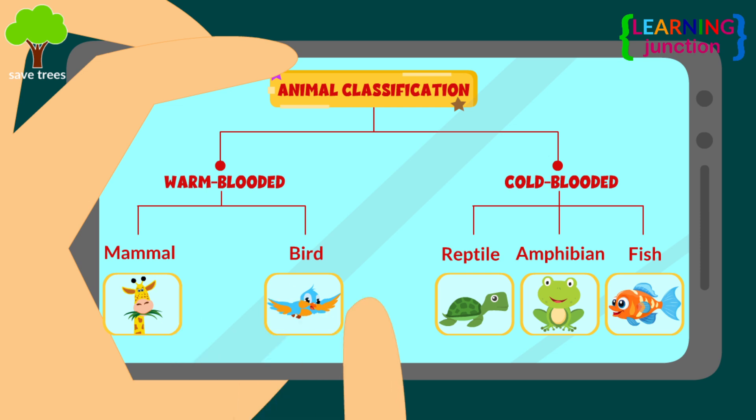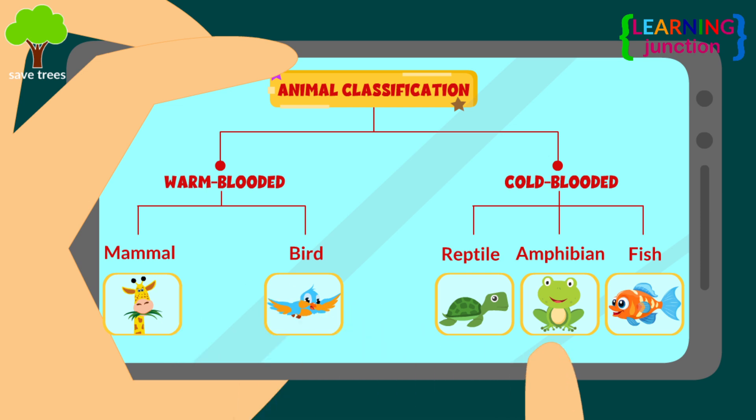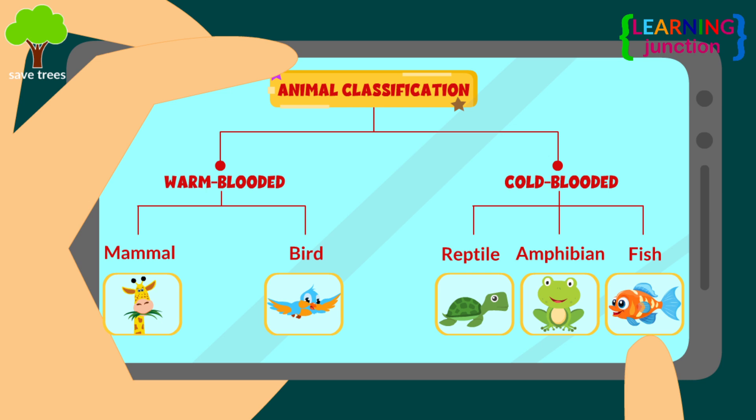Mammals and birds come into the warm-blooded category. Reptiles, amphibians, and fish come into the cold-blooded category.